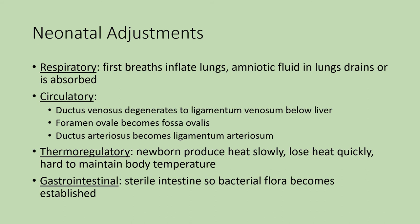For the newborn, it has been in a warm, comfortable environment with everything provided by the mother. Going through the birthing process is traumatic. Evaluations are done using APGAR scores to assess the newborn. There are neonatal adjustments that must occur. Respiratory: after mucus is aspirated, the infant takes its first breath, inflating the lungs. Amniotic fluid in the lungs must drain or be reabsorbed. For the circulatory system, the shunts need to be closed: the ductus venosus degenerates to become the ligamentum venosum; the foramen ovale becomes the fossa ovalis in the atrial wall; and the ductus arteriosus becomes the ligamentum arteriosum — so blood no longer bypasses the lungs via the pulmonary artery to the aorta. All of those shunts must close or there will be severe consequences.